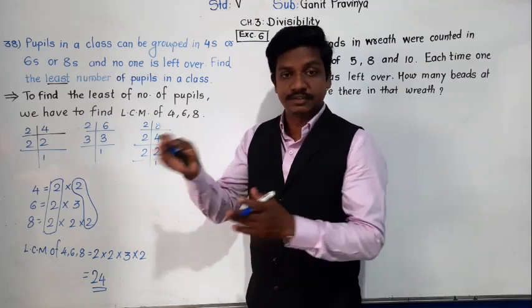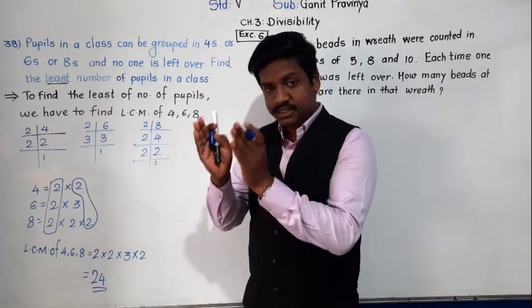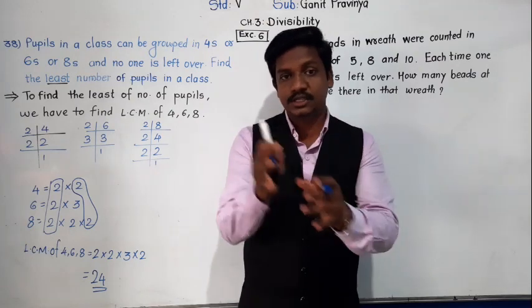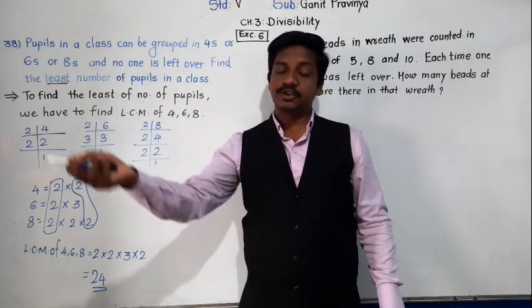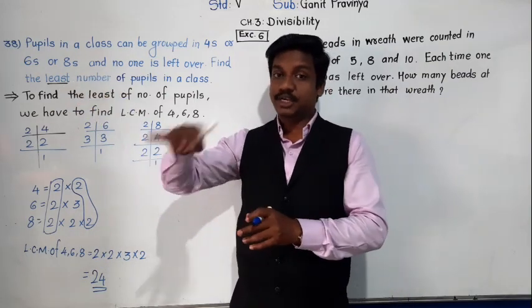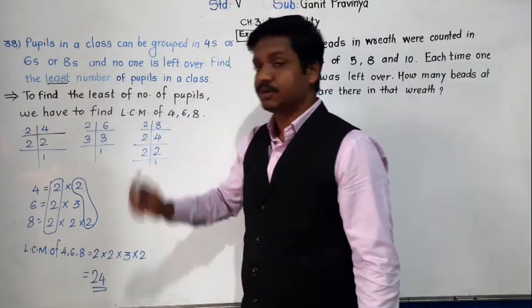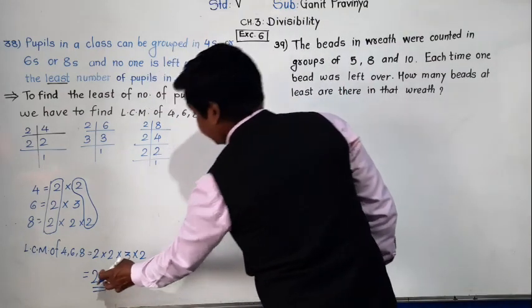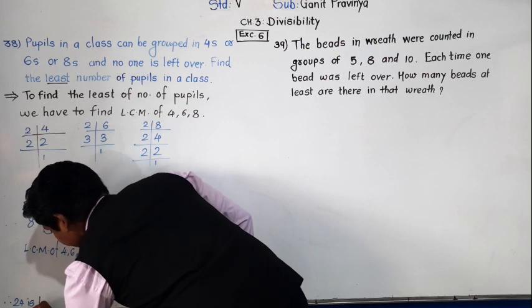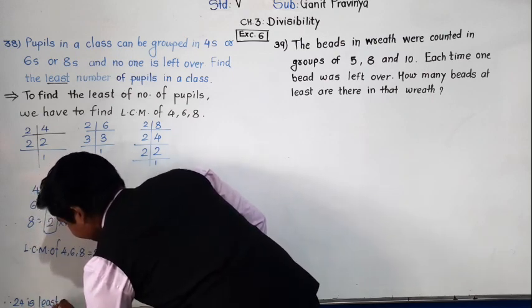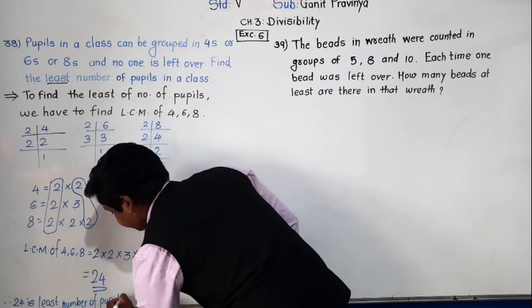If you check whether 24 is divisible by 4, 6 and 8, you can verify. 24 is in the table of 4, 6 and 8. So 24 is such a number which can be grouped into 4, 6 and 8. After 24, the next number which can be grouped into 4, 6 and 8 will be 48. So the answer is 24 — 24 is the least number of pupils in a class.